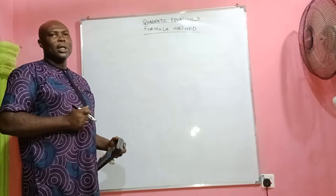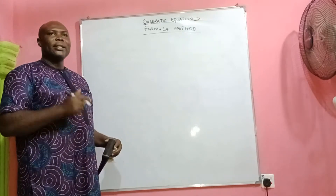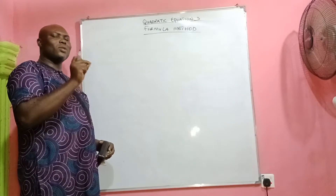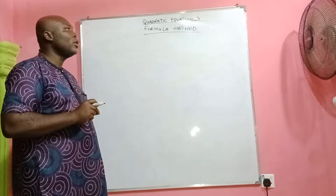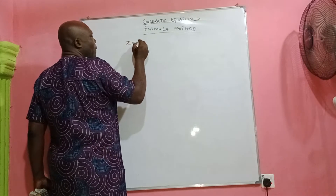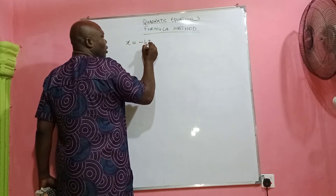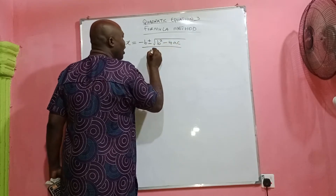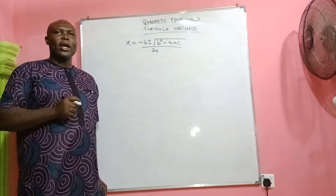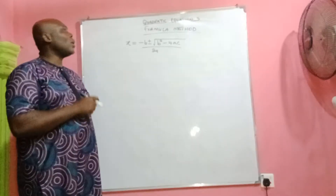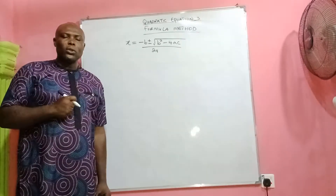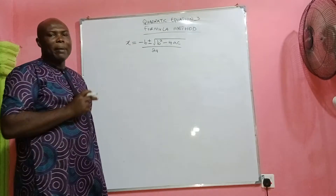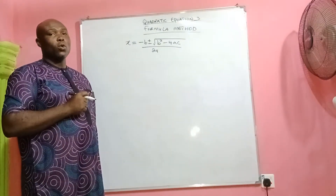Remember that the general form of a quadratic equation is ax² + bx + c = 0. When you complete the square of ax² + bx + c = 0, you arrive at x = (−b ± √(b² − 4ac)) / 2a. This is what we refer to as the formula method — the almighty formula — and it is used in solving quadratic equations.